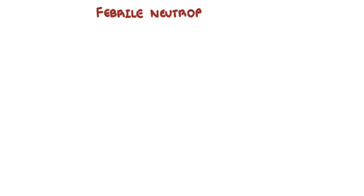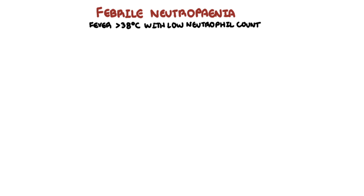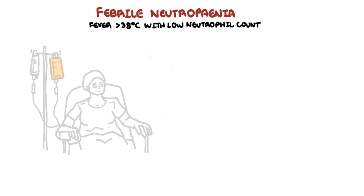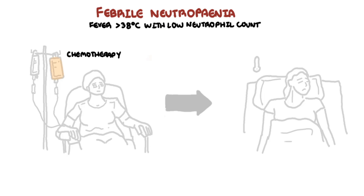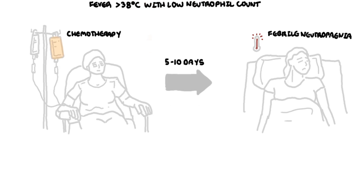In this video we're going to talk about febrile neutropenia. Febrile is fever and neutropenia is low levels of immune cells called neutrophils. Febrile neutropenia is a complication that can occur 5 to 10 days after someone receives chemotherapy for cancer, and it can lead to someone quickly becoming septic.